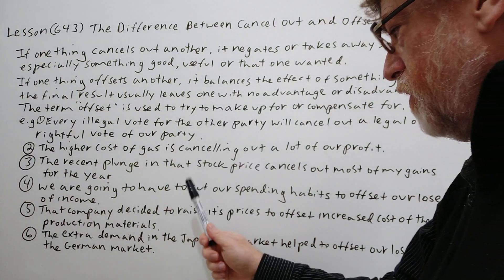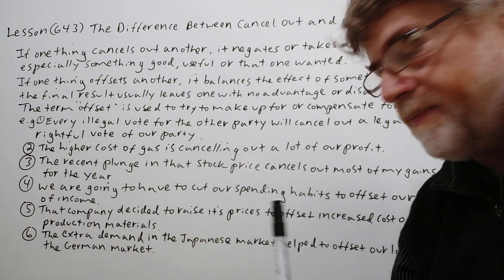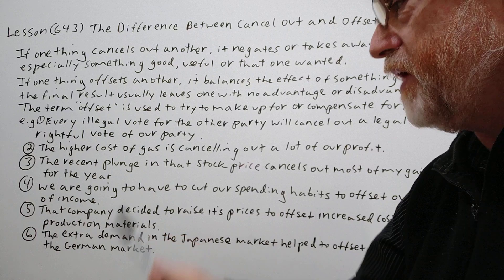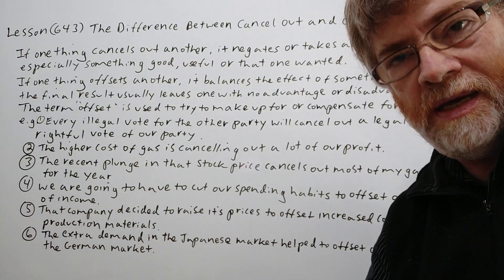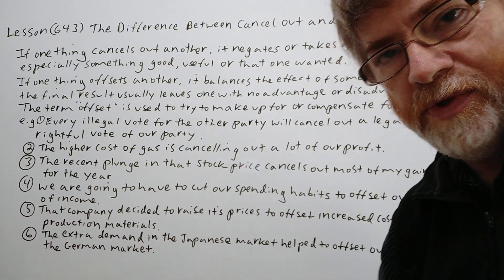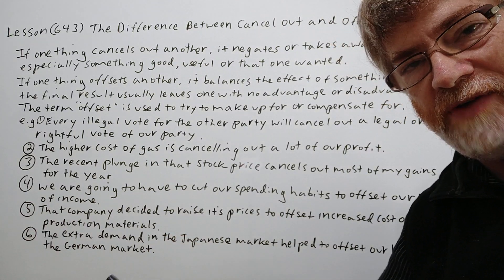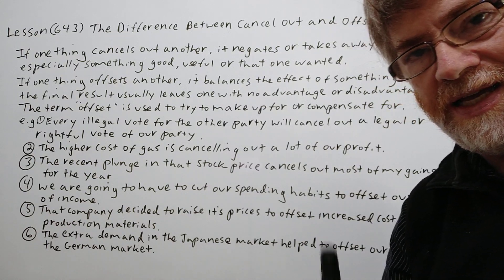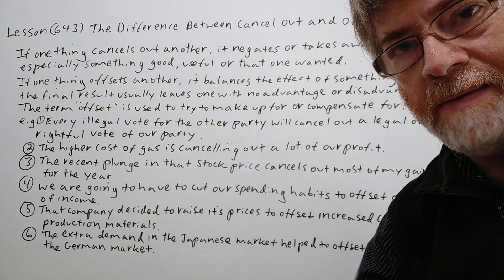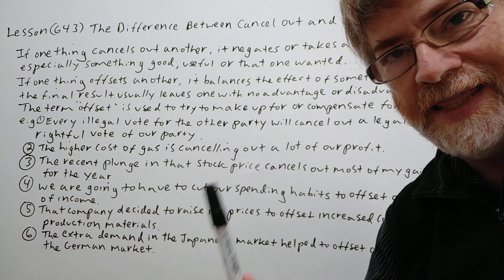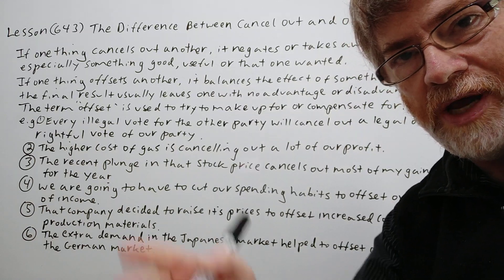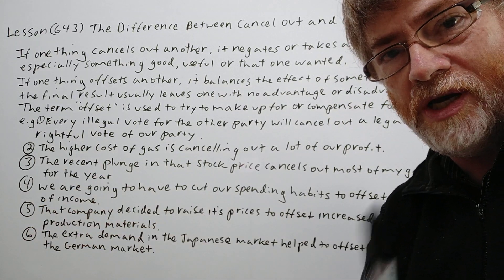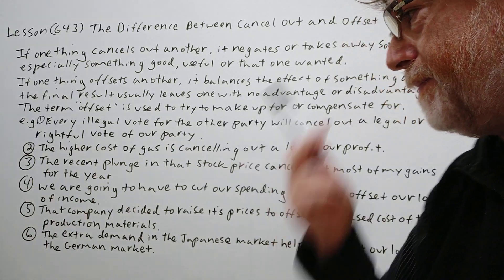Number four: we're going to have to cut our spending habits to offset our loss of income. This may be a situation where a husband and wife lost some of their work — they don't have as much income now and they realize they can't keep spending money like they did. So they have to try to make up for that loss, and in this case they're going to try to cut their spending to do that.